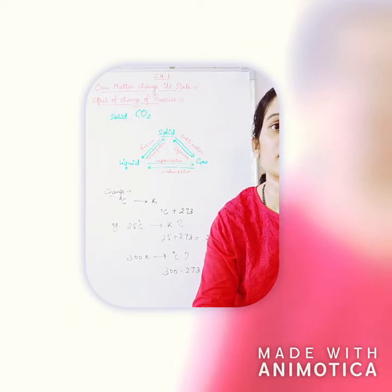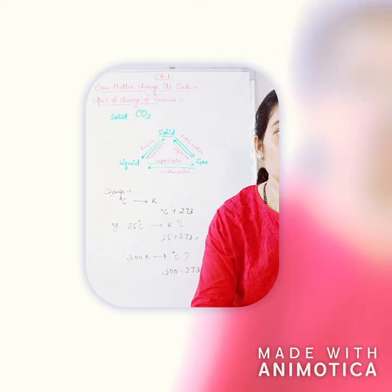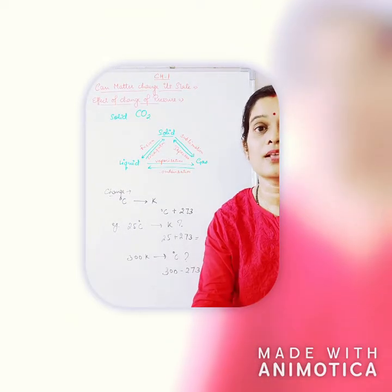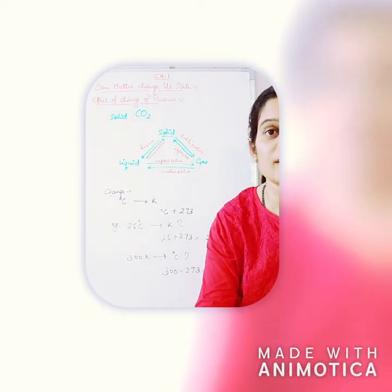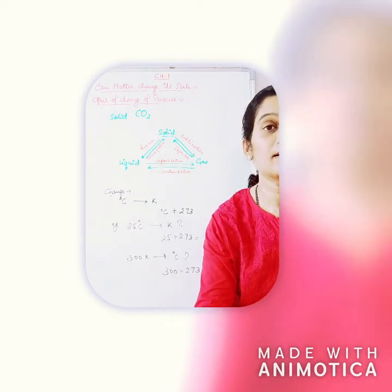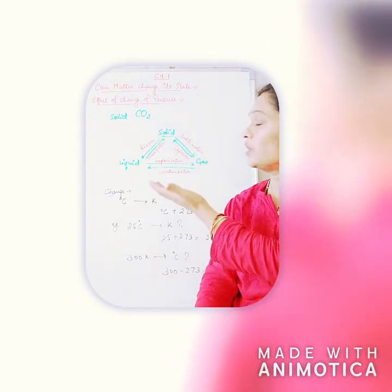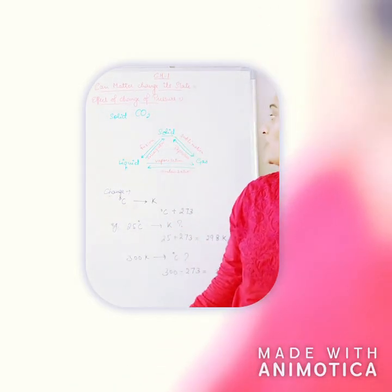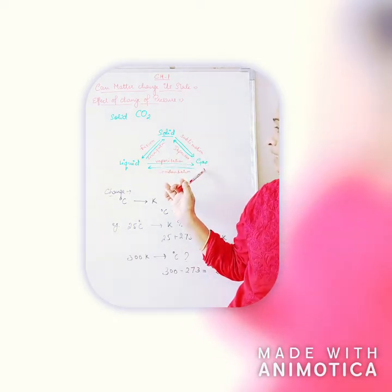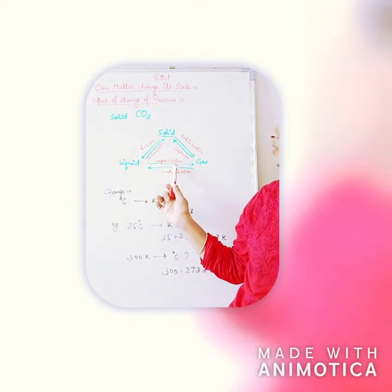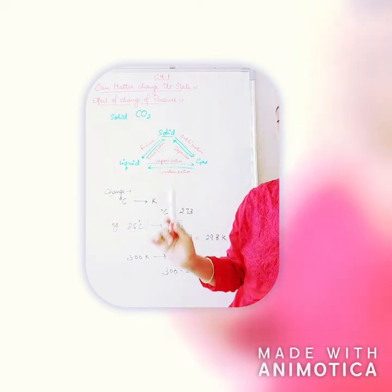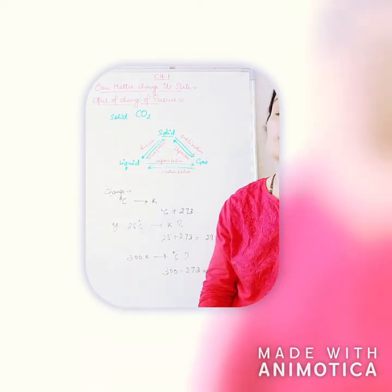Solid CO2 gets converted directly to the gaseous state on decreasing the pressure to one atmosphere — you can do the reverse also. In this case, you get solid directly from the gas, so you will not observe any liquid state. This is why solid CO2 is also called dry ice. When you convert solid to gas, this process is called sublimation, and gas into solid is deposition. If you convert liquid to gas, this is called vaporization, and gas into liquid is condensation. Converting solid to liquid is called fusion, and liquid to solid is solidification.